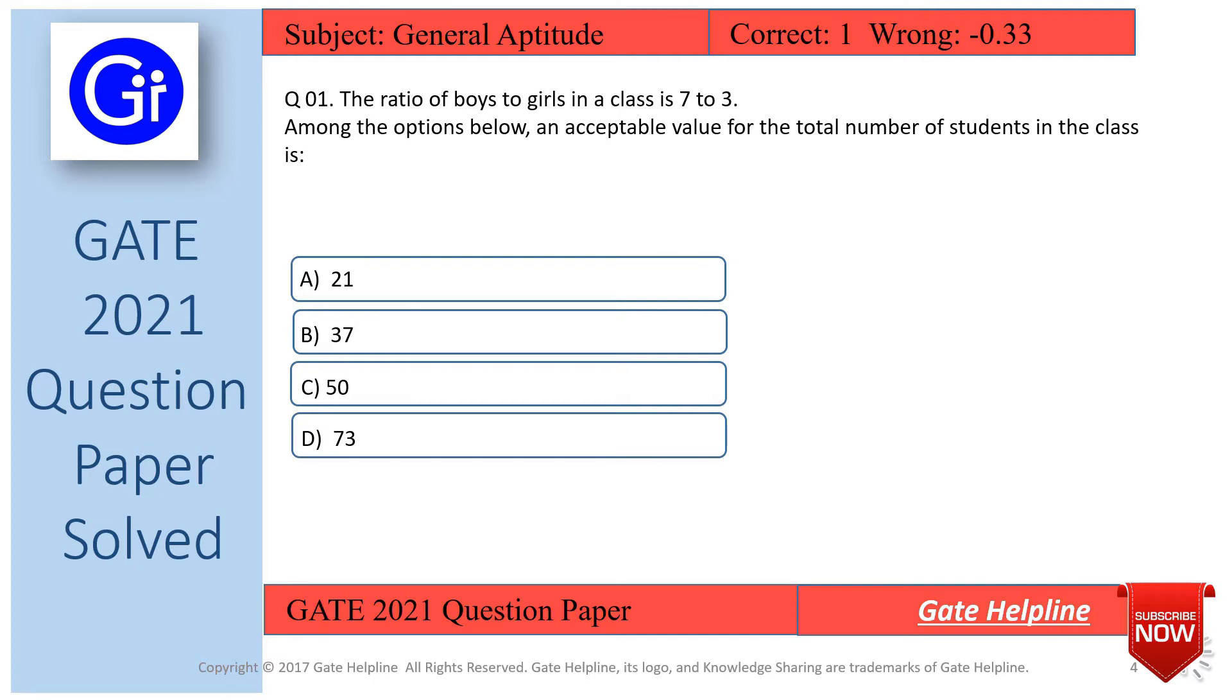In this question we need to tell an acceptable value for the total number of students in the class. The ratio is given to us - boys to girls is 7:3. This is an elementary mathematics question.